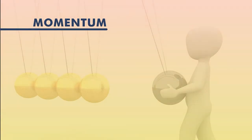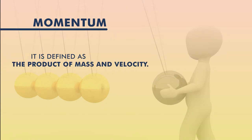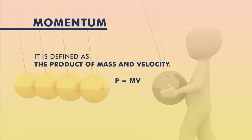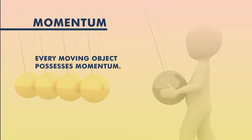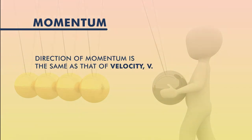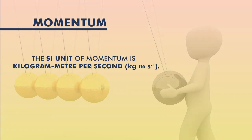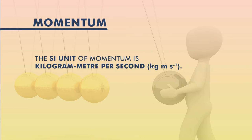When you talk about the second law of motion, you talk about a characteristic called momentum. Newton defined it as the product of mass and velocity: p = mv. Newton said that every moving object possesses momentum, and the direction of momentum is the same as that of velocity. He gave the unit of momentum as kilogram meter per second — kilogram being the unit of mass and meter per second the unit of velocity — so the SI unit of momentum is kilogram meter per second.